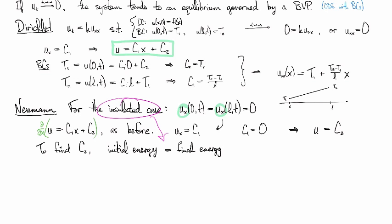Let's look at these expressions. The initial energy, that's going to be the integral over the bar of our initial condition, f(x). Then the final energy, well, that's going to be the integral over the bar of our equilibrium solution u, which we just found out is c2.